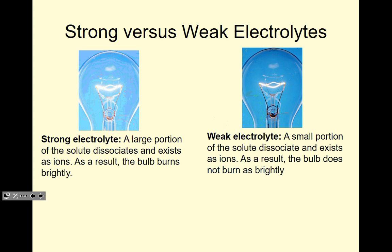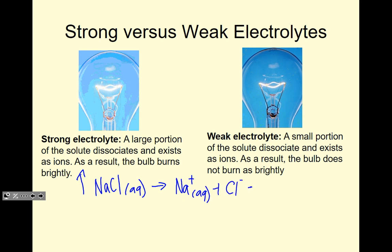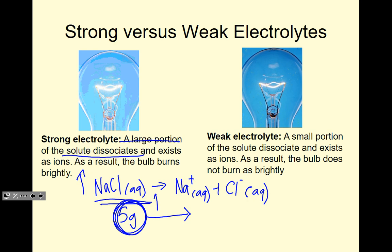Strong versus weak electrolytes: for a strong electrolyte, a large portion of the solute dissociates and exists as ions — as a result the bulb burns brightly. For a weak electrolyte, only a small portion dissociates — the bulb does not burn as brightly. For example, NaCl is a strong electrolyte — more than 99% of the dissolved NaCl breaks down into sodium and chloride ions. A weak electrolyte might only have about 30% of the compound breaking down into its ions.